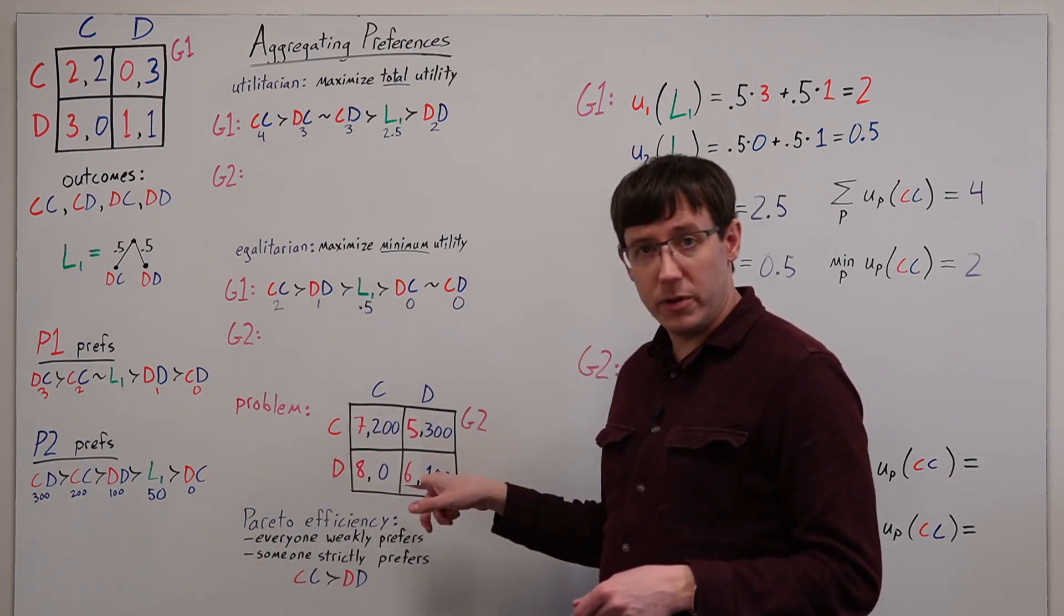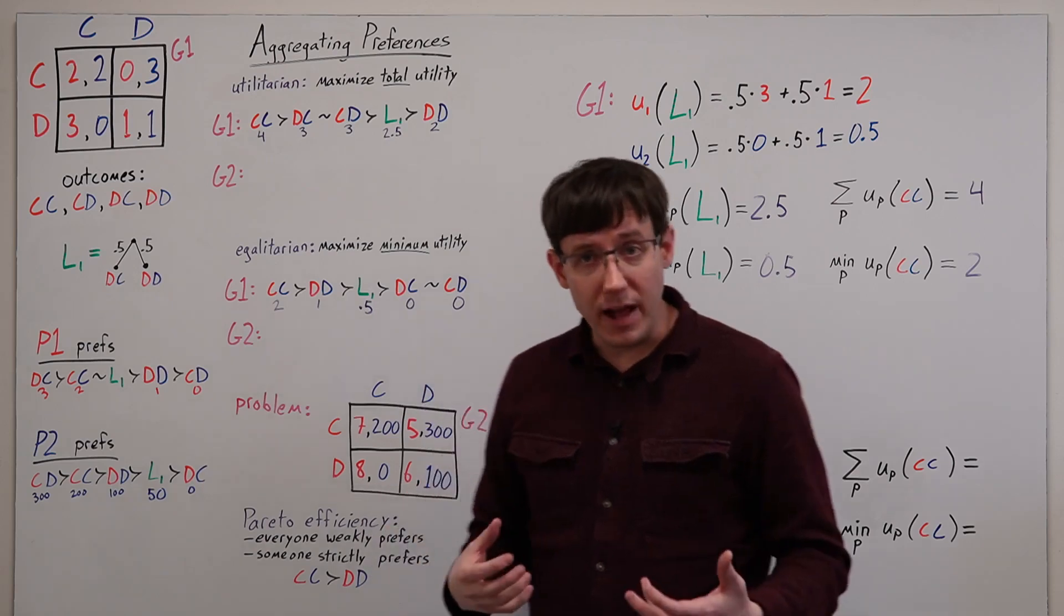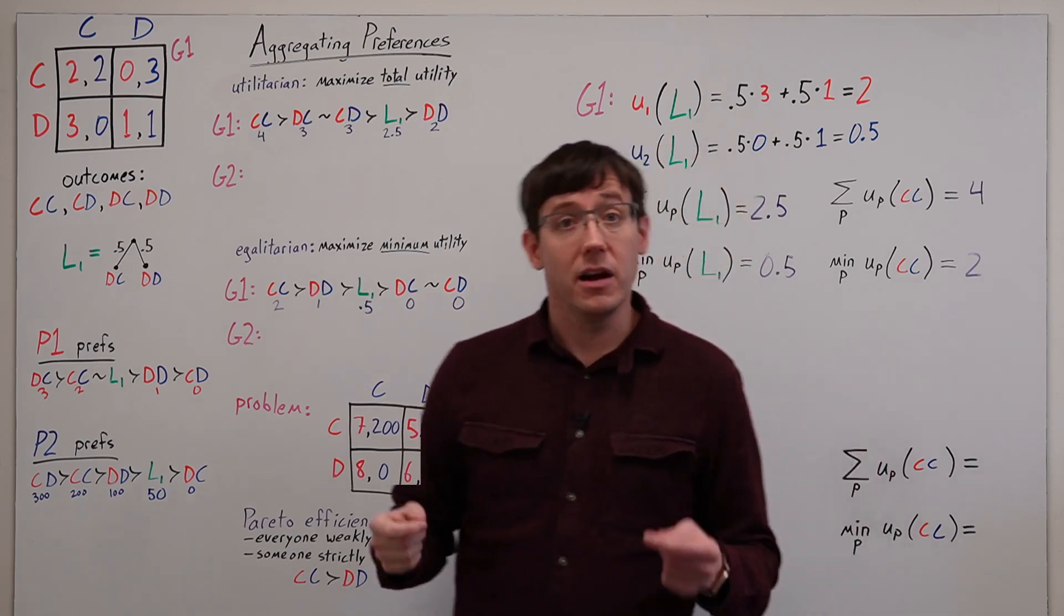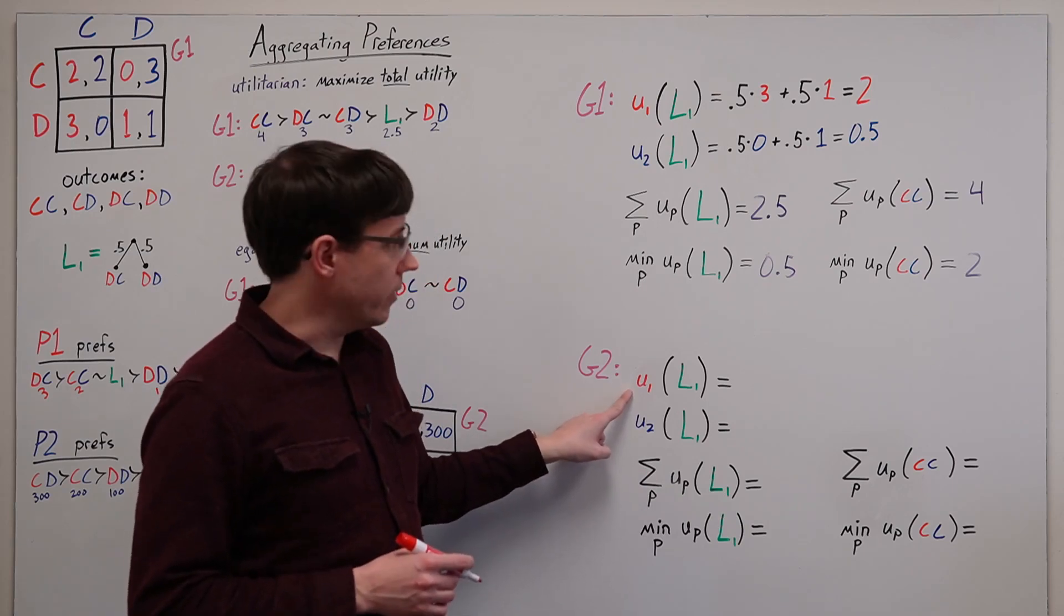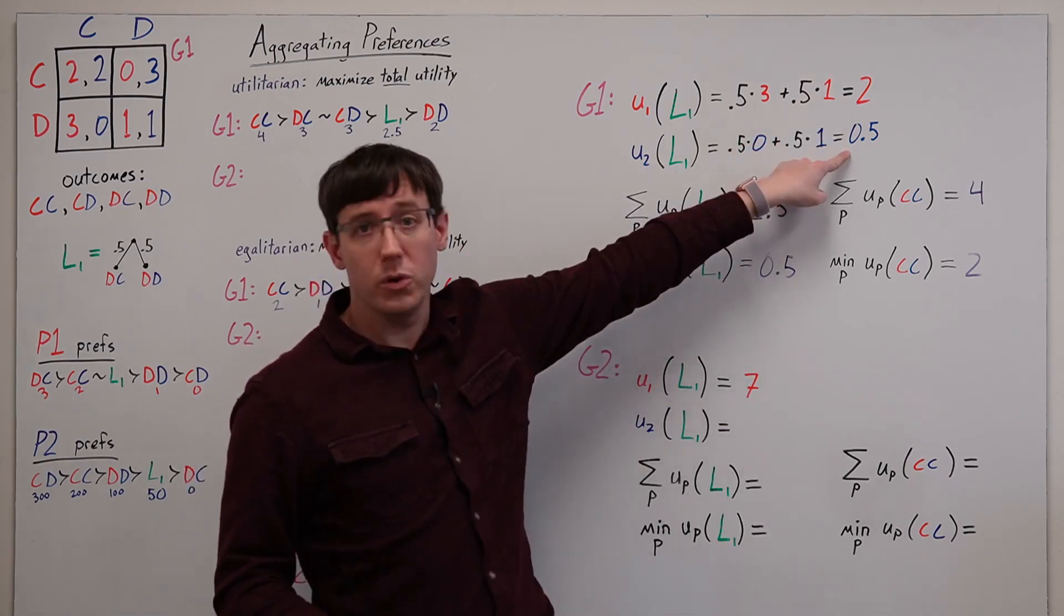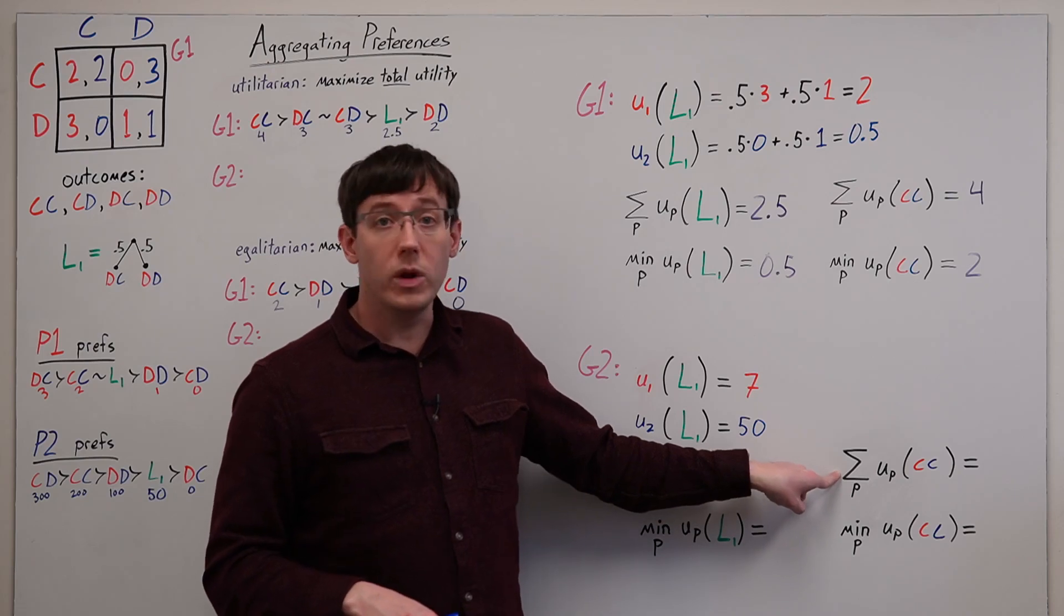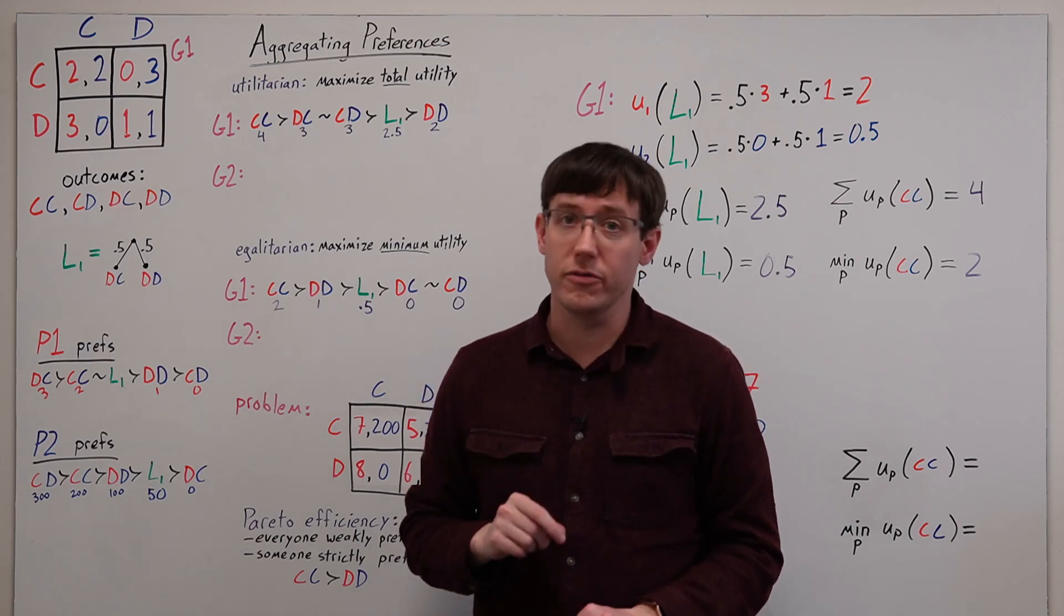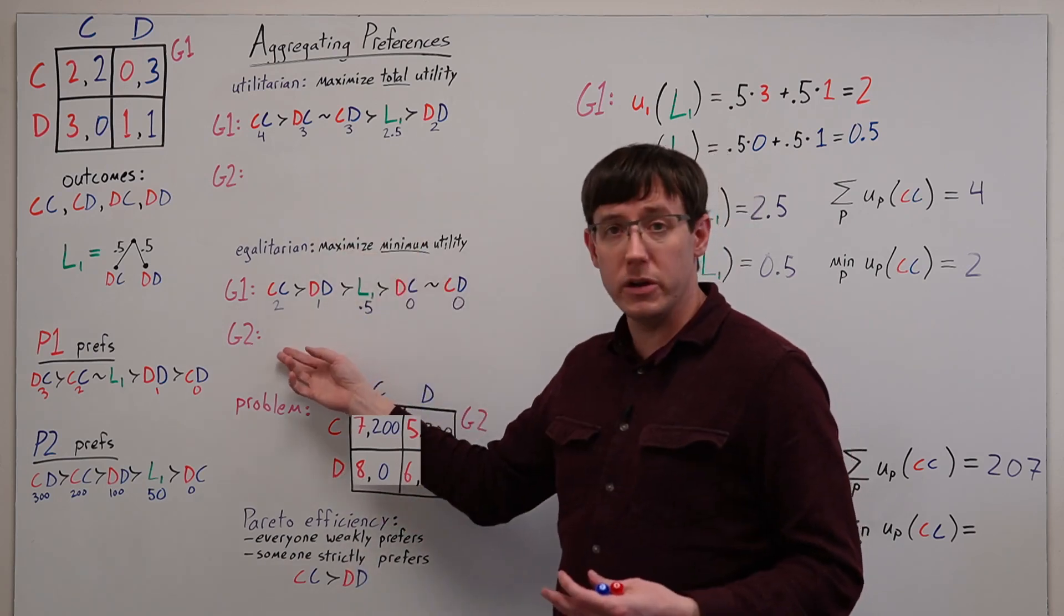So this payoff matrix describes exactly the same game as our basic prisoner's dilemma. And yet, if we evaluated our utilitarian and egalitarian criteria on this payoff matrix, we might get a very different result. In this new payoff matrix, we know that player 1's utility for the lottery is just their old utility plus 5, and player 2's utility is just their old utility times 100. But now if we re-evaluate our sum of utilities criterion, we'll be adding the player 1 and player 2 payoffs that have been modified in different ways, and so we will need to re-rank all of the outcomes according to each criterion for game 2.